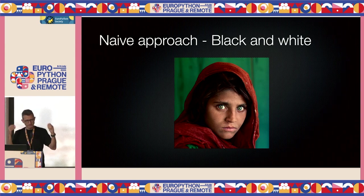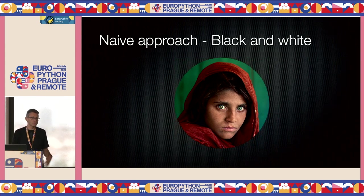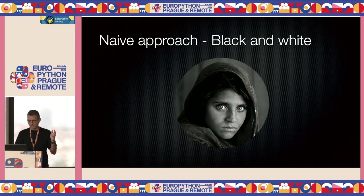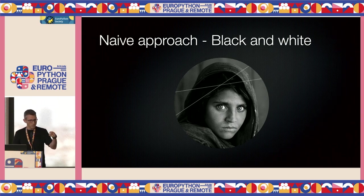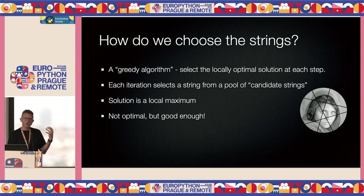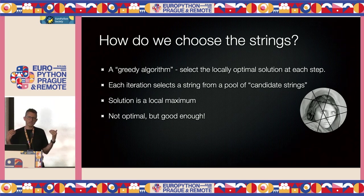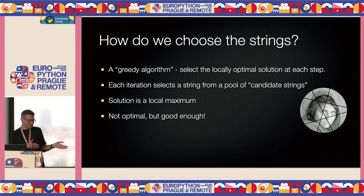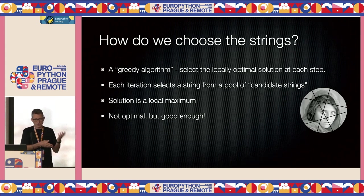First, let's try it in black and white before we go crazy with color. We take a round version of it in black and white, and we want to select strings that will eventually give us the image. How do we choose these strings? The algorithm we're going to use is a greedy algorithm. A greedy algorithm, to put it in plain terms, is one that does the best it can at each point — just like most of us with the information it has.